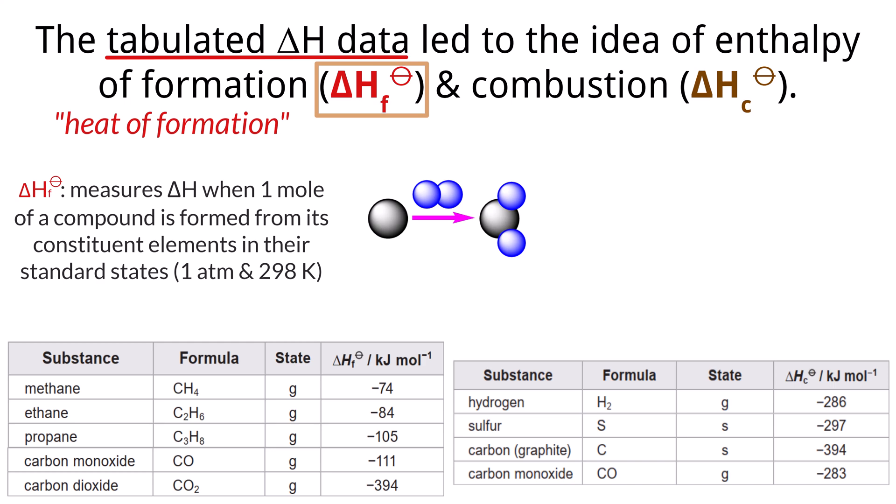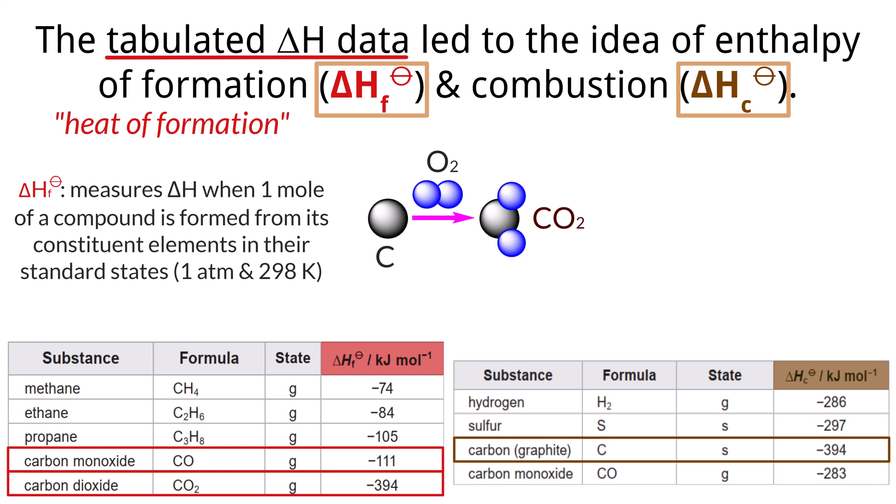From a previous example of carbon plus oxygen going to CO2, we have calculated two enthalpies of formation: carbon monoxide at negative 111 kilojoules per mole and carbon dioxide at negative 394 kilojoules per mole. Not only that, but since we have fully combusted carbon, we now have the standard enthalpy change of combustion, delta H sub C naught, for carbon, which is negative 394 kilojoules per mole.